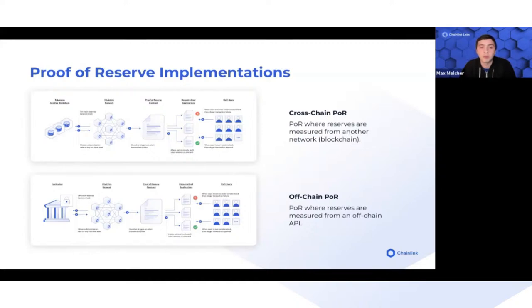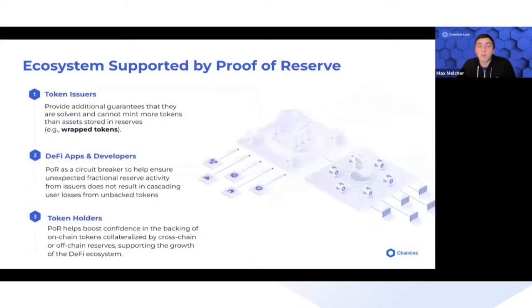Off-chain proof of reserve covers web2 and traditional financial custodial services. When we think about who proof of reserve benefits, we look at three categories. First is the token issuer — people issuing both wrapped assets and off-chain collateralized assets. To them, this provides additional guarantees that they are fully backed.